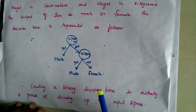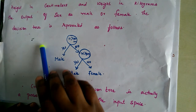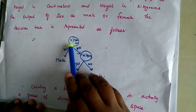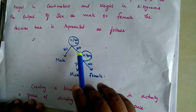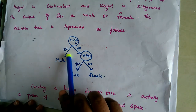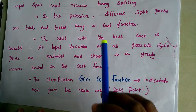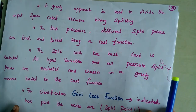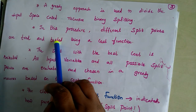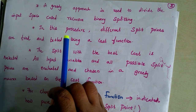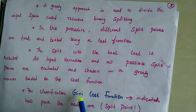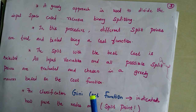Since this is a supervised task, we are separating the training data using the attributes — splitting the input space and building the model in a greedy fashion. The greedy approach is used because different split points are tried: different attributes are tried and tested using a cost function.